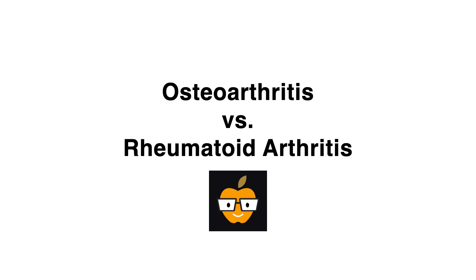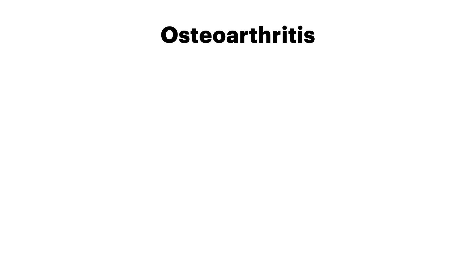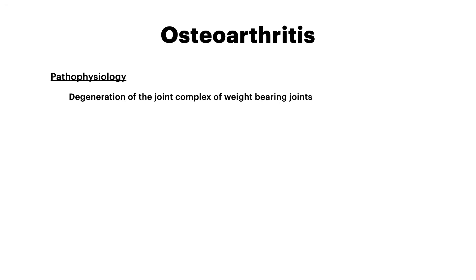Osteoarthritis versus rheumatoid arthritis. Let's start with osteoarthritis. From a 100-level perspective, think of osteoarthritis as degeneration and inflammation in a weight-bearing joint because of mechanical force and resulting inflammation.